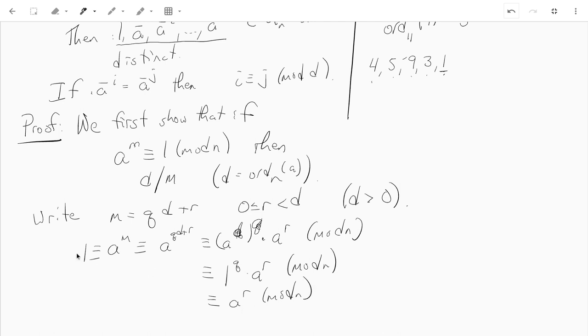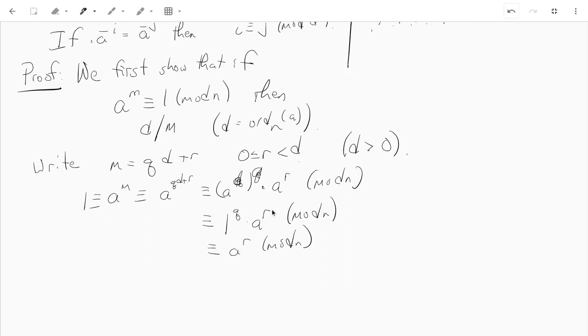So now we have that a to the r is congruent to 1 mod n. r is less than d, but d is the least positive integer such that a to the d is congruent to 1. r is another integer such that a to the r is congruent to 1 that's less than d, but it may not be positive. If it's positive, that's a problem because then r would be the order, not d. So it must be that r equals 0. So r equals 0, and if not, or else, d was not the order after all. So r equals 0, but then it just says that d divides m.